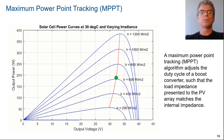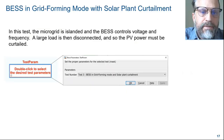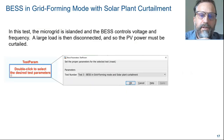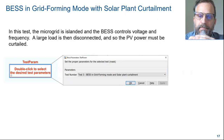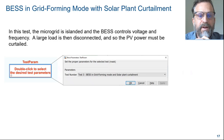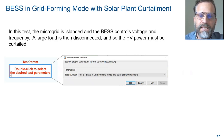I'll now pass back to Patrice, who will discuss a grid-forming and solar curtailment scenario in our microgrid model. In this scenario, the microgrid is islanded and the battery energy storage system operates in grid-forming mode, meaning it directly controls voltage and frequency. To run the scenario in the model, we double-click on the test param block and select test number 3 from the drop-down list before simulating the model.